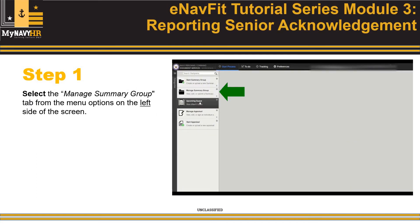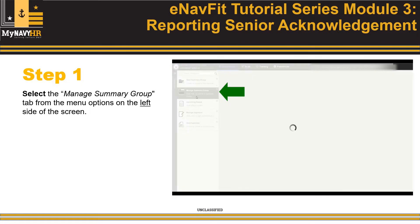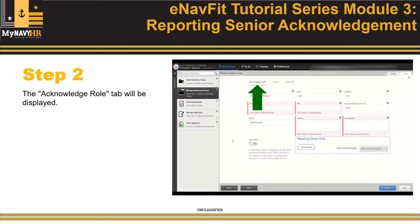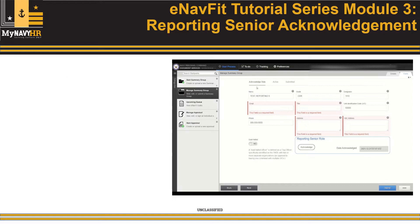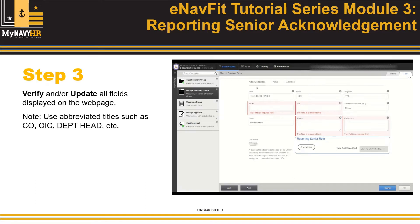Step 1. Select the Manage Summary Group tab from the menu options on the left side of the screen. Step 2. The Acknowledge Role tab will be displayed. Step 3. Verify and/or update all fields displayed on the web page. Note: use abbreviated titles such as CO, OIC, or those listed in Bupers Instruction 1610.10 Foxtrot.